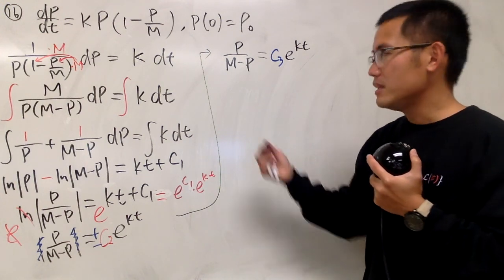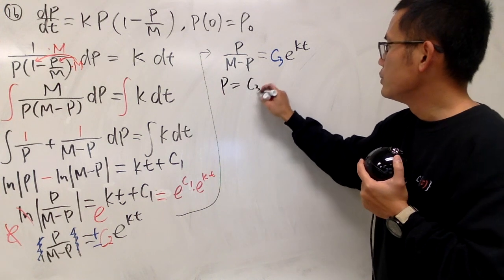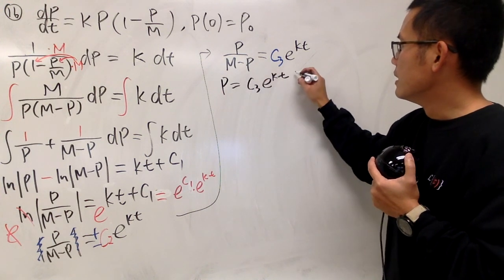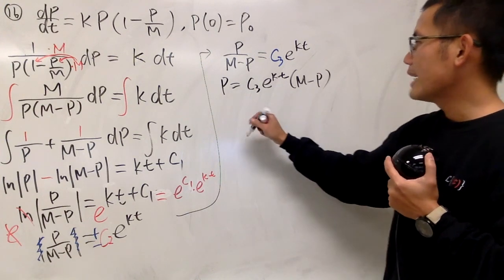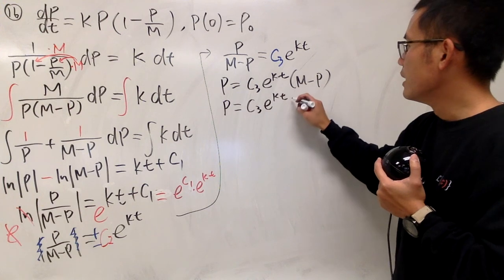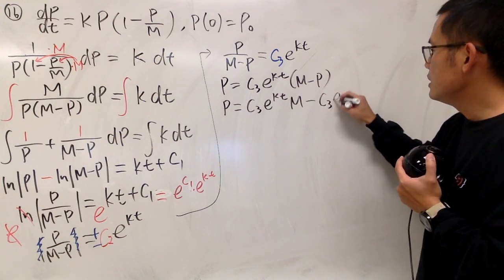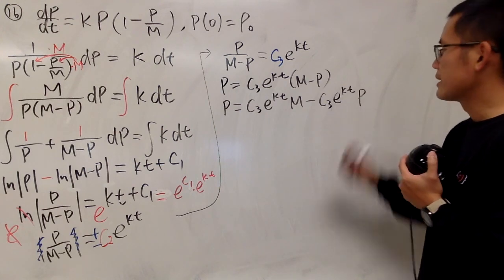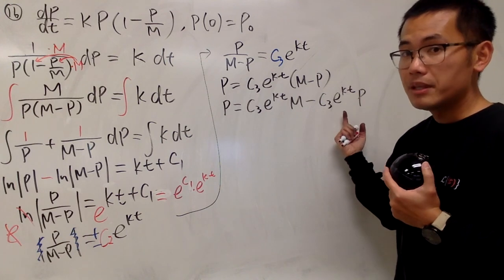So we will have p/(m-p) equals c₃ e^(kt). c₂ is a constant, minus c₂ is also a constant, so let's call that c₃. Now to isolate the p, multiply this on both sides. So we have p equals c₃ e^(kt)(m-p). Distribute that: p equals c₃ e^(kt) m minus c₃ e^(kt) p.